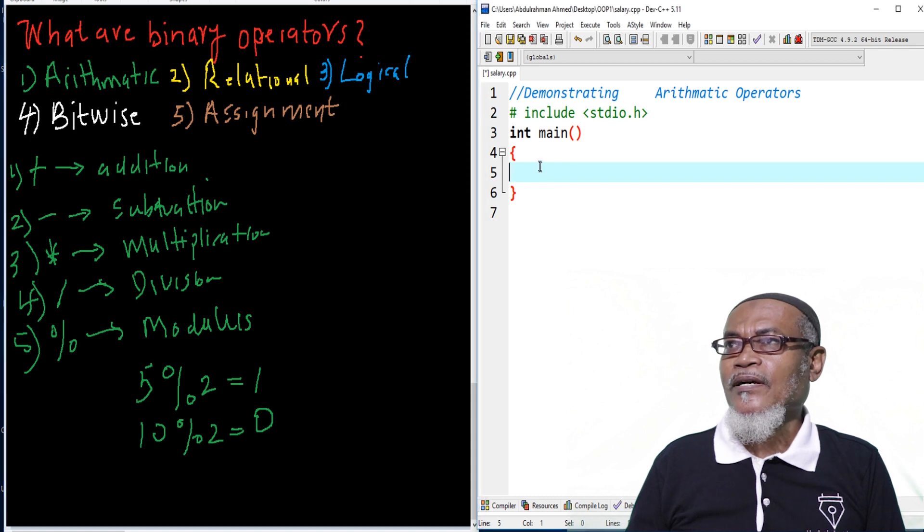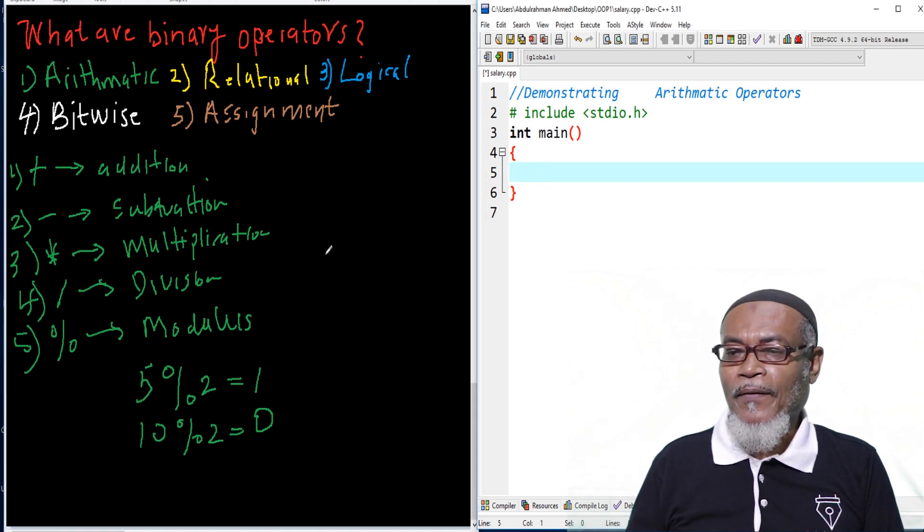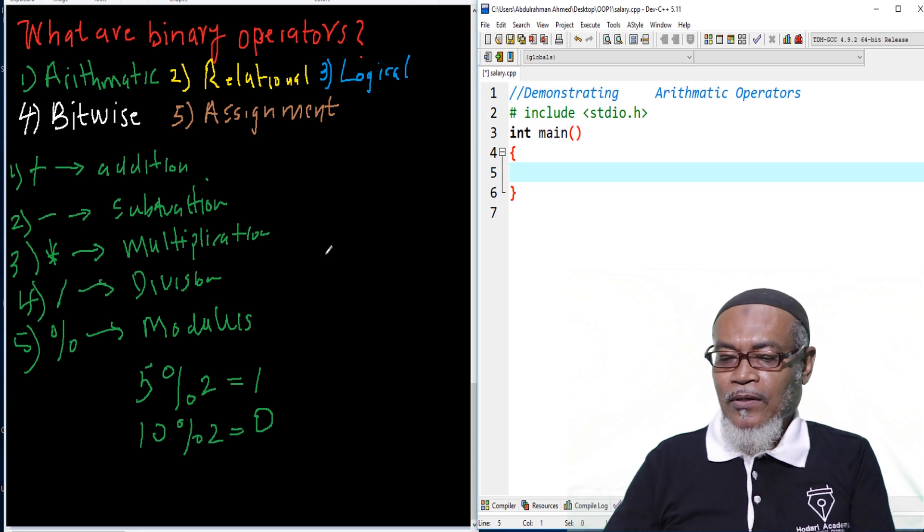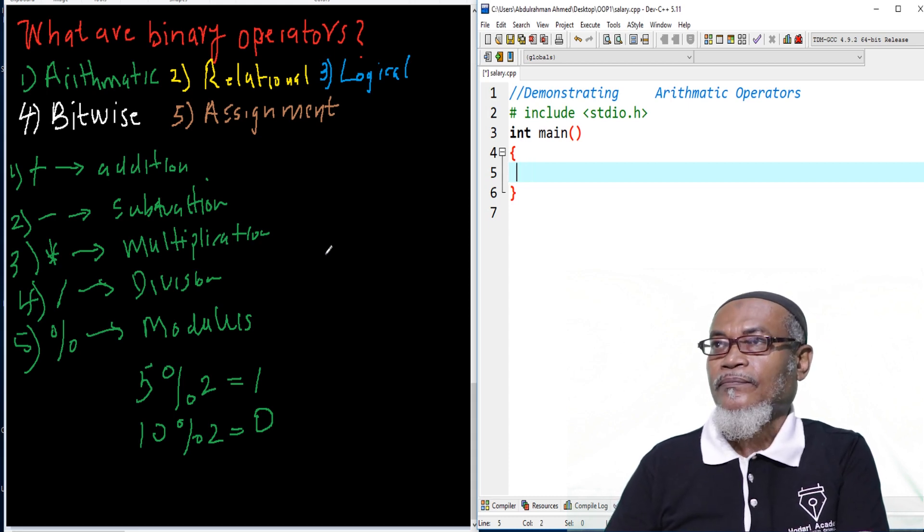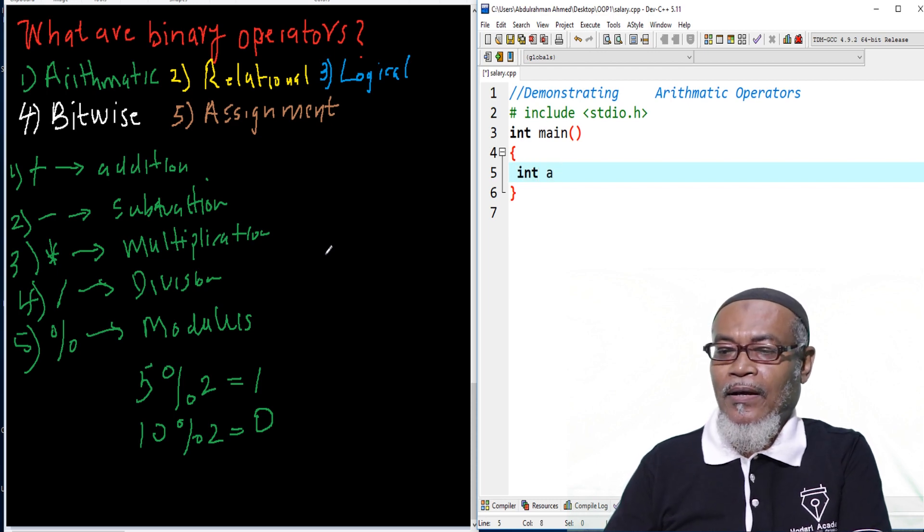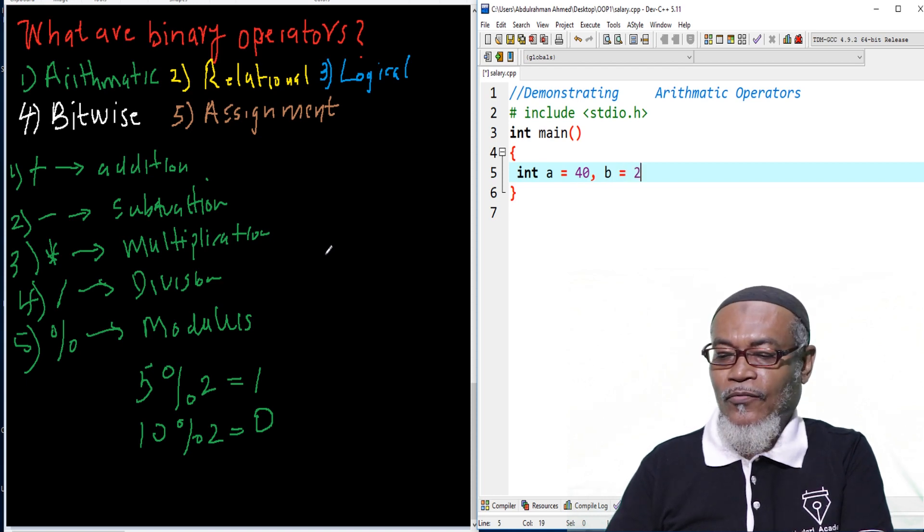Let's demonstrate them in our Dev C++ and see what happens. Let's take an example where we can demonstrate all of them. Let's declare some variables. I'm declaring a variable A and assigning the value of 40. And then, another variable called B, and I'm assigning the value of 20.